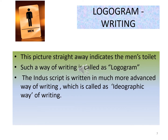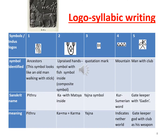Logogram writing: the picture straight away indicates the men's toilet — such a way of writing is called a logogram. The Indescript is written in a more advanced way called ideographic writing. The logo-syllabic way of writing is also present. The first symbol shows the dead ancestor, who were called 'pitrus' in Sanskrit. The second grapheme is a composite of two symbols — the fish symbol drawn within the upraised hands symbol. These two symbols together stand for the word 'karma' in the logo-syllabic way of writing.